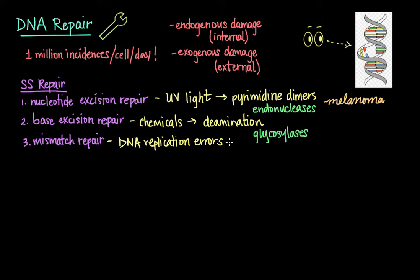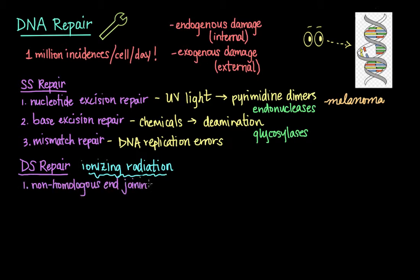So those are the main types of single-strand repair. Now let's talk about double-strand repair. Damage that occurs to both strands in the double helix can occur when there is exposure to ionizing radiation, such as gamma rays and x-rays. Just like there are three main mechanisms for single-strand repair, there are three main mechanisms of double-strand repair: non-homologous end-joining, micro-homology-mediated end-joining, and homologous recombination.